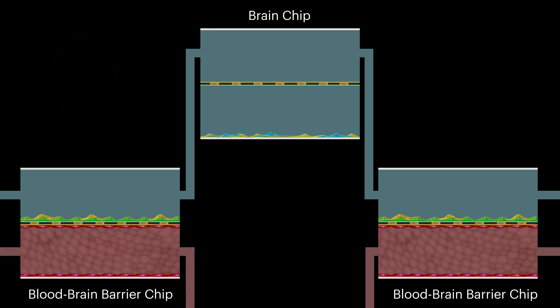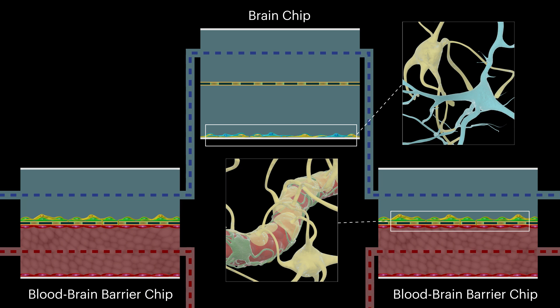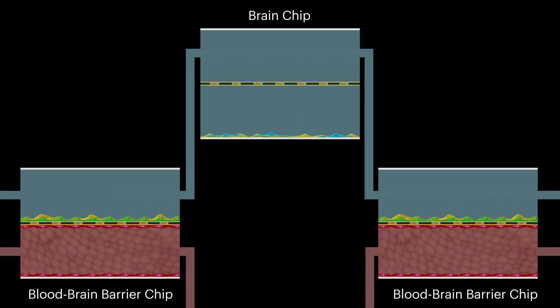Using this system, researchers discovered that the vascular and neuronal cells in chips that are fluidically linked produce proteins that are more similar to those naturally found in the human brain and its blood vessels than the proteins produced by cells in unlinked chips.